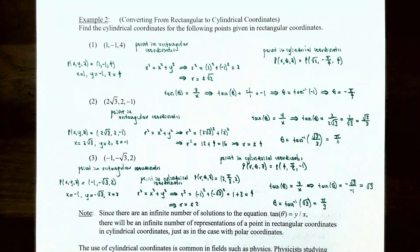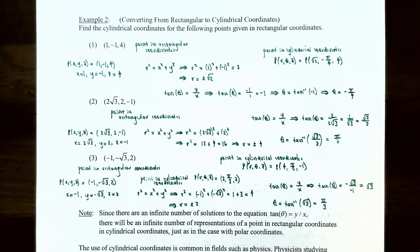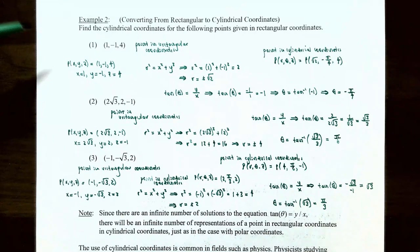Now Example 2: let's reverse the process and convert from rectangular coordinates to cylindrical coordinates. Find the cylindrical coordinates for the following points given in rectangular coordinates. Number one: the point (1, −1, 4). We want to convert this from rectangular to cylindrical coordinates, so we need to find r, theta, and z.